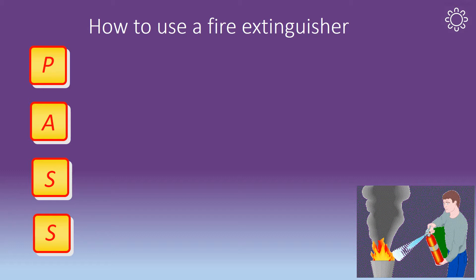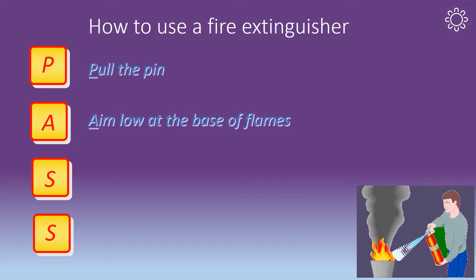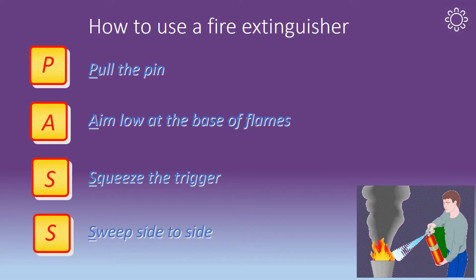To operate a fire extinguisher, remember the PASS acronym: P — pull the pin; A — aim the nozzle; S — squeeze the trigger; S — sweep the fire side to side.